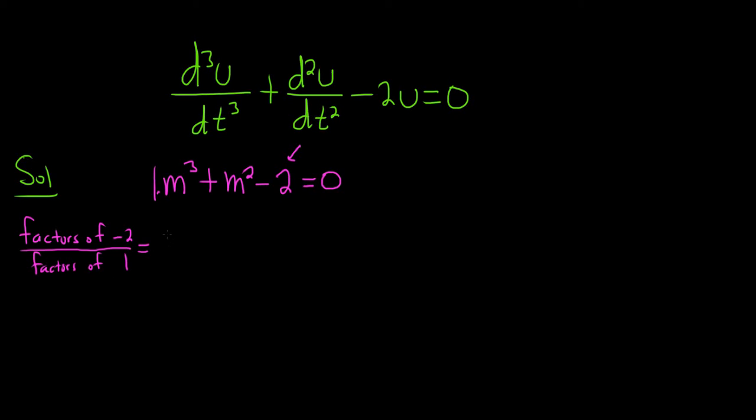The factors of negative 2 are plus or minus 1, and plus or minus 2, and the factors of 1 are just plus or minus 1. So 1 over 1 is 1, and then 2 over 1 is 2. So these are the possible rational roots. So now what we do is we check, and to check we use synthetic division. It's a good idea to always start by checking 1, so let's check 1.